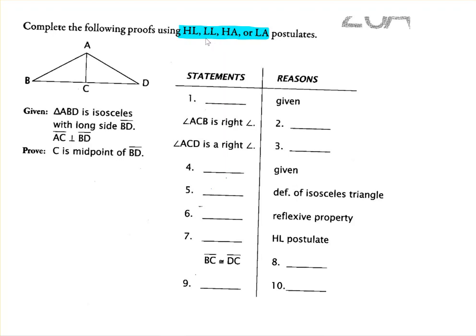You cannot use these postulates unless you have a right triangle. So it's very important when you're doing these proofs that before you cite one of these postulates as a reason, you show first that you are indeed working with right triangles. So I see hypotenuse-leg cited as a reason in this proof.